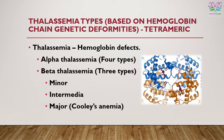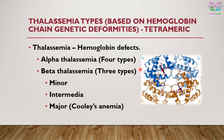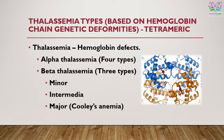In thalassemia the defect is also in the hemoglobin protein, which has four chains — two alpha chains and two beta chains. If the defect is in the alpha chain, that is known as alpha thalassemia, and there are four types of alpha thalassemia. If the problem is in the beta chains, it is known as beta thalassemia, and there are three types: minor beta thalassemia, intermedia, and major — also known as Cooley's anemia.